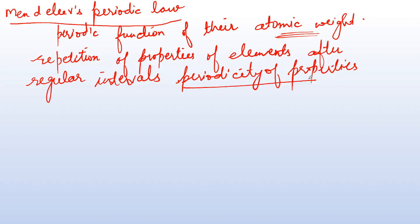Mendeleev gave the classification. Basically, this periodic law was given by Mendeleev in 1869. Lothar Meyer independently proposed very similar results, but the work of Lothar Meyer was published only after the work of Mendeleev. So Lothar Meyer was also there, but Mendeleev is credited.